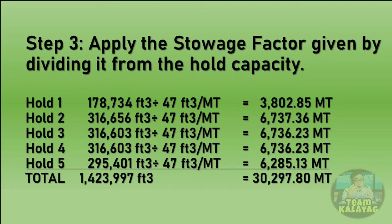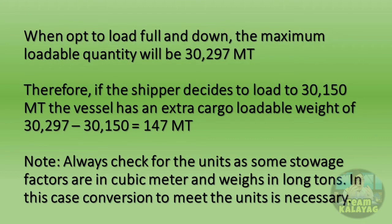Step 3: Apply the stowage factor by dividing it from the hold capacity. For holds 1 through 5, you have the volume in cubic feet. Divide each by the stowage factor of 47 cubic feet per metric ton to obtain the weight in metric tons. Therefore, the maximum load all holds can lift is 30,297 metric tons — and this is without considering draft. When loading to full and down, the maximum loadable quantity will be 30,297 metric tons.